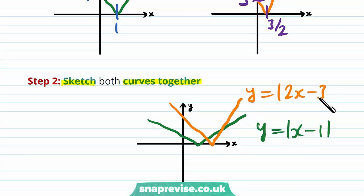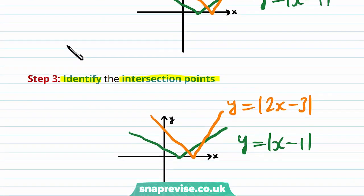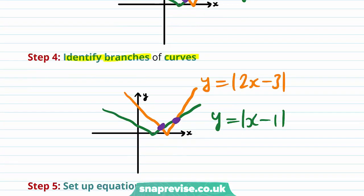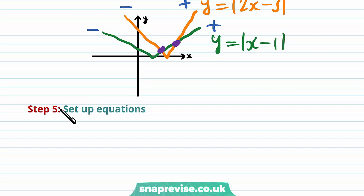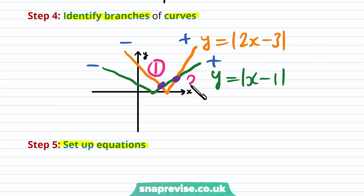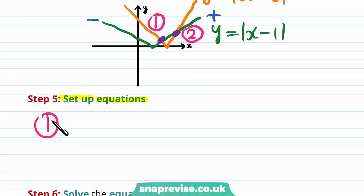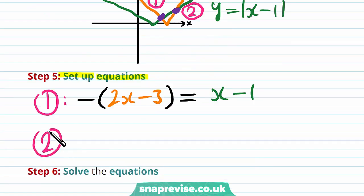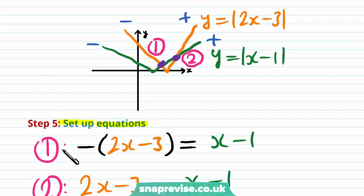The third step is to identify the intersection points, which clearly occur here and here. The fourth step is to identify the branches of the curves — both curves have positive coefficient x terms and therefore the right branches are positive and the left branches are negative. The fifth step is to set up equations. Labelling the two intersections as 1 and 2, the first equation will be minus of 2x minus 3 equals the positive version of x minus 1, because the first point corresponds to the negative branch of 2x minus 3 and the positive branch of x minus 1. The second equation will be the positive of 2x minus 3 equals the positive of x minus 1, because the second intersection point occurs on the positive branch of both curves.